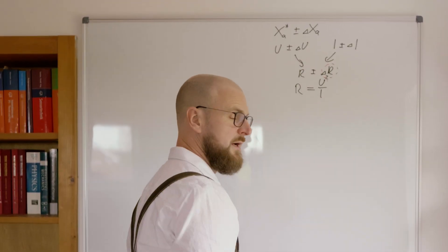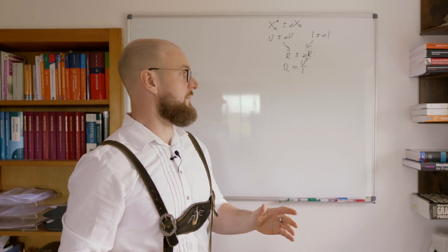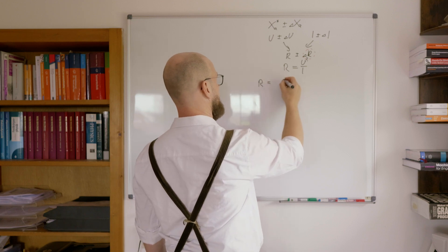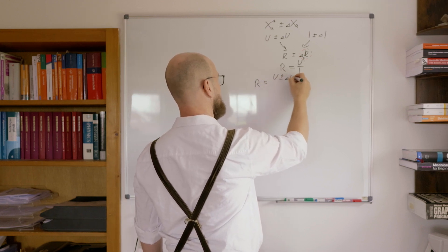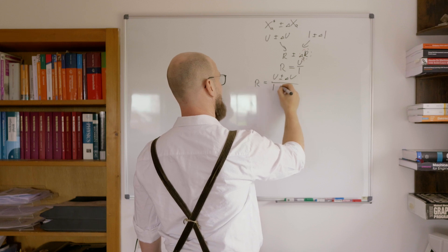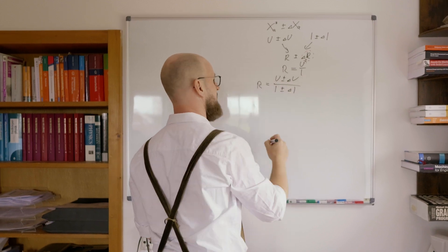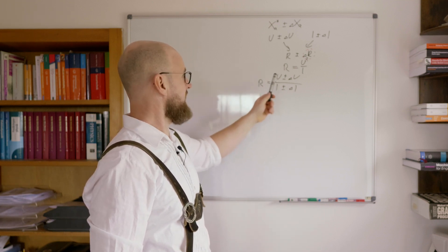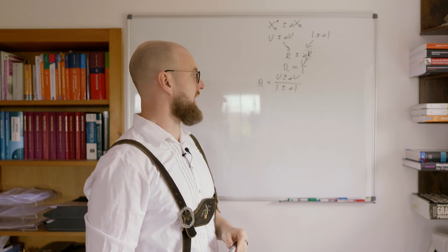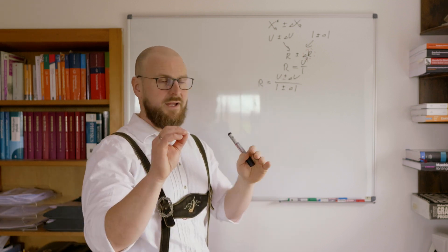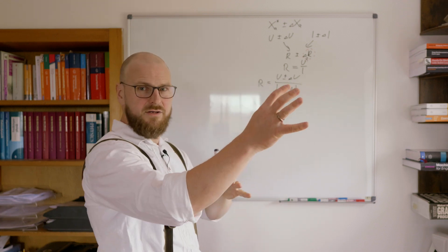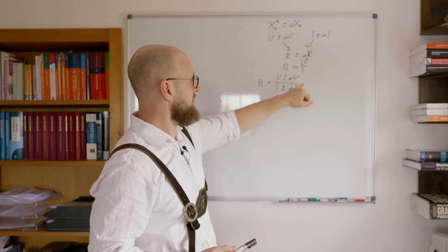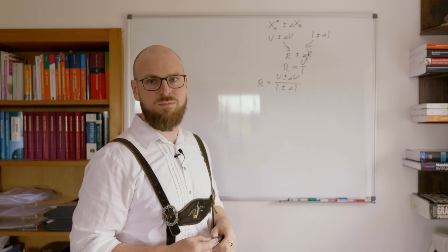Okay, writing it directly down. One could just say, look, R is nothing more than U plus minus delta U over I plus minus delta I. So, that's great. Having values for U, for I, for the voltage, for the current, and for the respective errors, we could put in all combinations of errors and values we have, and now just choose the maximum values we